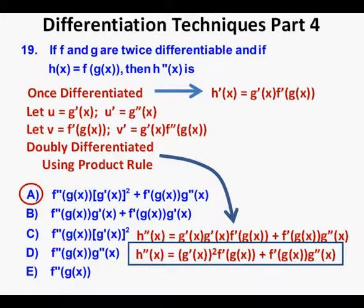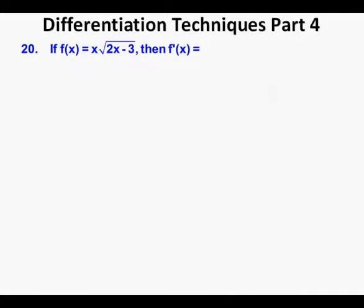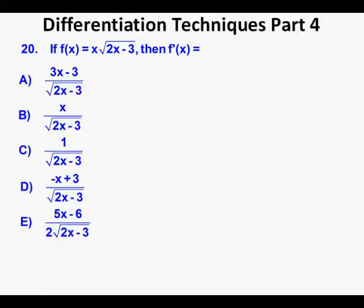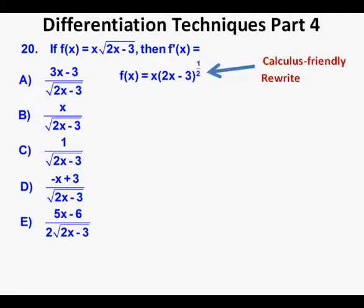Problem 20: If f(x) = x · √(2x − 3), then f'(x) equals — and we're given five multiple choice answers A through E. This problem is an opportunity for using the power rule, chain rule, and product rule. First, a calculus-friendly rewrite: f(x) = x · (2x − 3)^(1/2). The radical exponent is changed to rational form. We let u = x and v = (2x − 3)^(1/2).